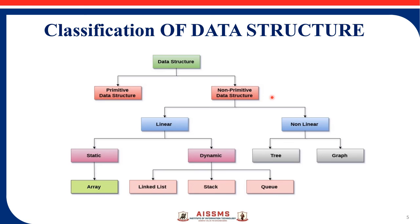Array, linked list, stack, queue, tree, and graph are all included in non-primitive data structures. Non-primitive is again divided into linear and non-linear. A linear data structure traverses data elements sequentially, in which only one data element can directly be reached — examples are array, linked list, stack, and queue. A non-linear data structure is one where every data item is attached to several other data items in a way that reflects relationships — for example, graph and tree.